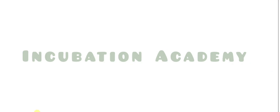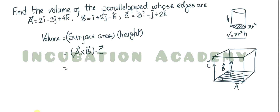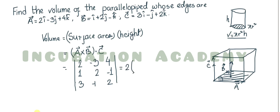Returning to the problem, we substitute the values into the determinant: first row is a = (2, −3, 4), second row is b = (1, 2, −1), third row is c = (3, −1, 2). Expanding along the first row: 2 × (2×2 − (−1)(−1)) = 2 × (4 − 1) = 2 × 3.